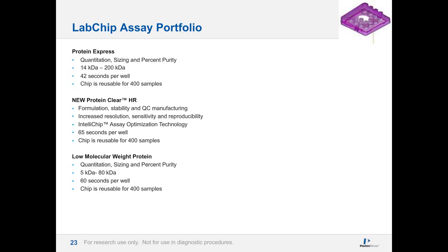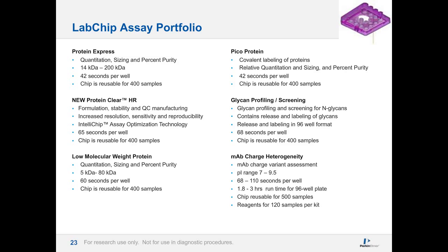Our new Protein Clear assay is the newest in our protein portfolio, really for formulation, stability, QC, and manufacturing needs. It has increased resolution via a longer separation channel, increased sensitivity, and better detection for low-level impurities, achieved by optimization of the on-board dye in the chip. We have better CVs around the lower impurity levels, and reproducibility and repeatability are achieved using the intelligent features Anubhav described. With the longer separation channel, it is 65 seconds per well — still very high throughput and especially faster than traditional CE-SDS methods.